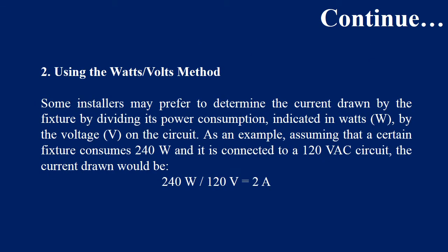The second method is the watts per volts method, in which you calculate the power consumption of the circuit. For example, if my power consumption is 240 watts and my circuit has a 120 VA rating, I divide the power consumption by the VA rating. So 240 divided by 120 gives 2 amperes. That is the required circuit breaker rating for this case.